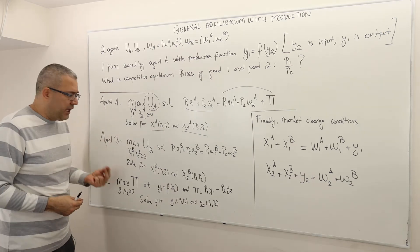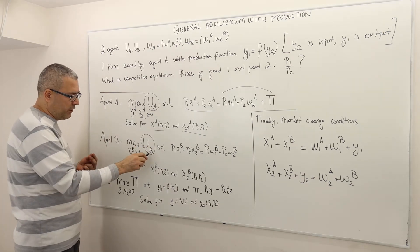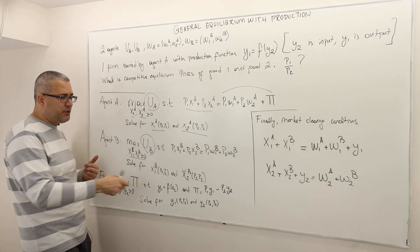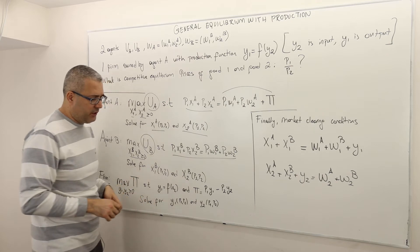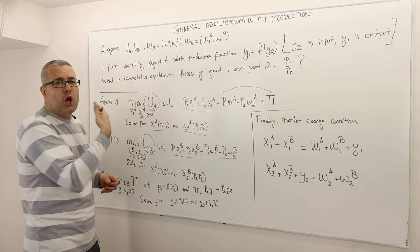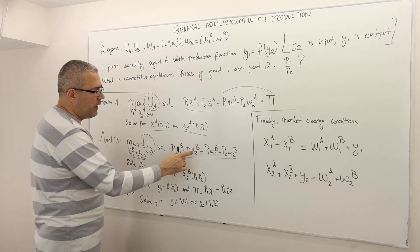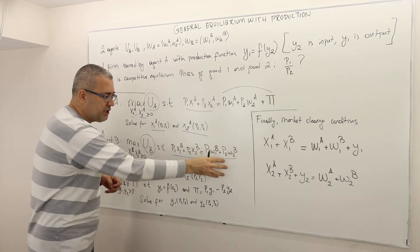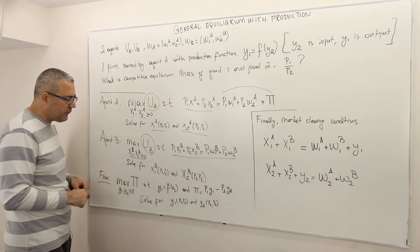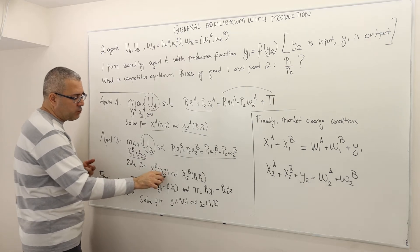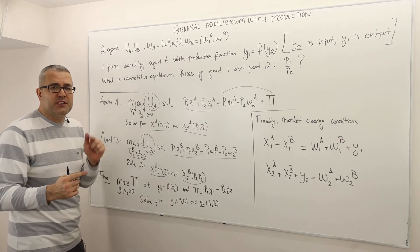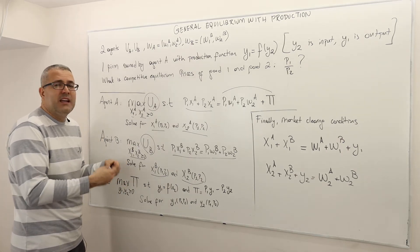Exactly the same for agent B: maximize utility of B by choosing non-negative X1B and X2B subject to a budget constraint. Agent B's budget constraint is simpler because there's no profit — she doesn't own the firm. Her expenditure equals her income, which is generated by selling her endowments. So we solve for X1B and X2B, which are functions of prices P1 and P2 — they are demand curves.